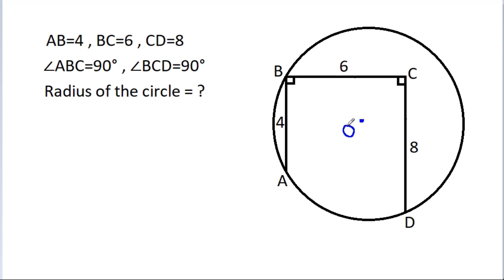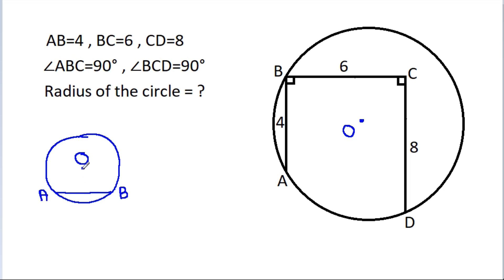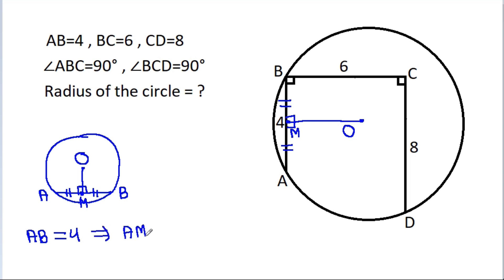Suppose O is the center of the circle. In any circle, if O is the center and AB is any chord, and if we draw a perpendicular from O on AB — suppose this point is M — then AM will be equal to BM. Here, AB is 4, so AM will be equal to BM, which will be 2.